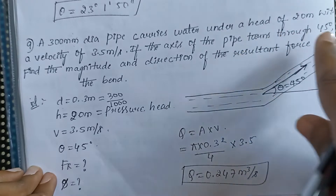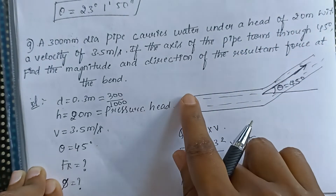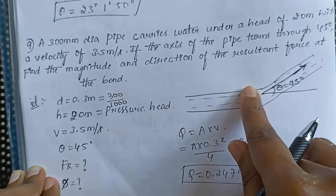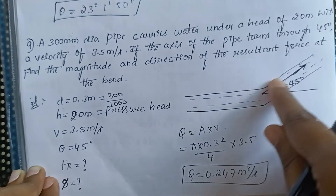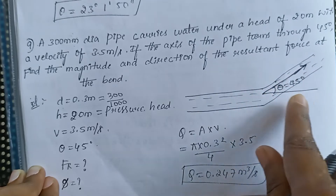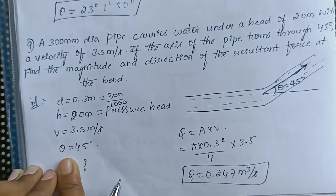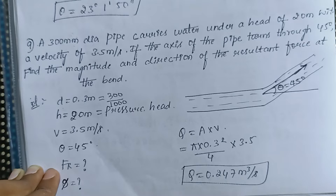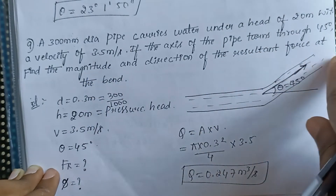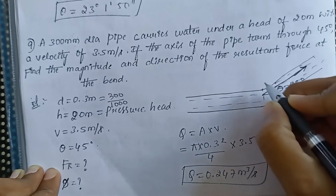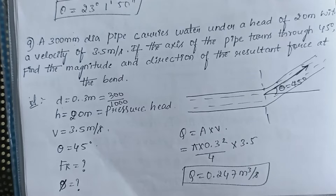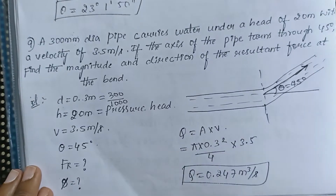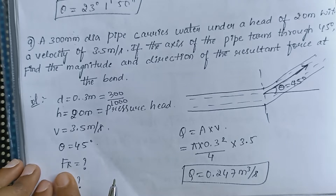The axis of the pipe makes an angle of 45 degrees — the pipe is laid straight and then bends at 45 degrees with respect to the horizontal. Let theta be the angle of deflection, which is 45 degrees. We have to find the resultant force FR and its direction phi.